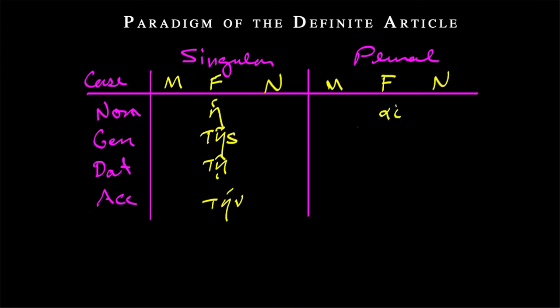And then in the plural, we had hai, tōn, tais with circumflex (always circumflex over the genitive and dative), and then tās. And this is a long alpha. I'm marking that; your Greek textbook won't, but this is to begin with. So these are feminine articles.